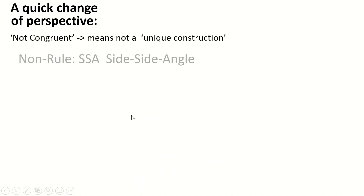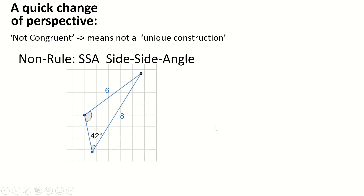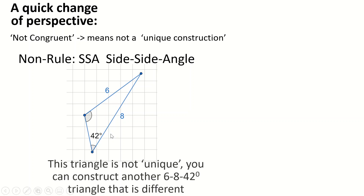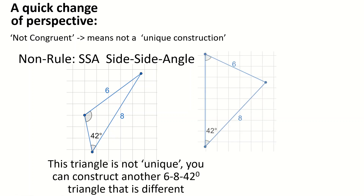The reason SSA isn't a congruency law is because it doesn't always create a unique triangle. For example, here's a 6, 8, 42 SSA triangle, and that's great, except there's another way to draw a 6, 8, 42 triangle that isn't just a reflection or a rotation. It's completely different. So this is a non-rule because they're not always a unique construction.